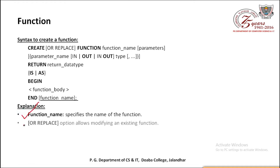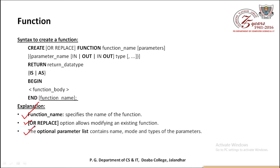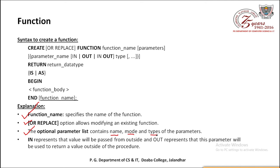Function name specifies the name of the function. CREATE OR REPLACE का मतलब है कि अगर already exist कर रहा है जो function आप create कर रहे हो तो उसमें वो changes या addition कर देगा। Parameter list optional है हमारे लिए - इसमें name, mode, and type of parameter होता है। IN का मतलब है value will be passed from outside, and OUT means this parameter will be used to return a value outside to the procedure or function।